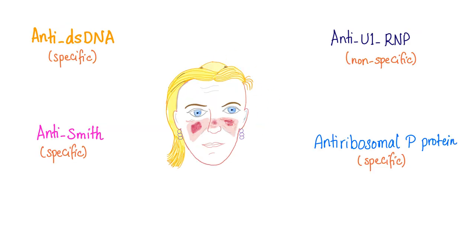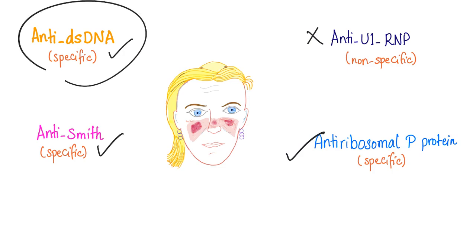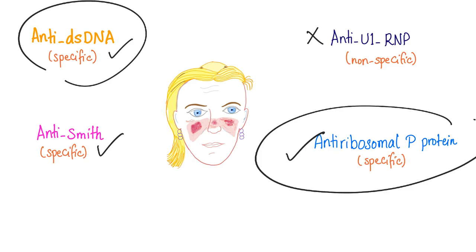Next we have lupus. Anti-double-stranded DNA, anti-Smith, anti-U1-RNP, anti-ribosomal P-protein — specific, specific, not specific, specific. Anti-double-stranded DNA is associated with lupus nephritis and lupus vasculitis. Anti-ribosomal P-protein is associated with CNS problems and liver disease.